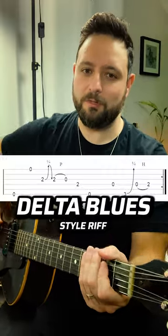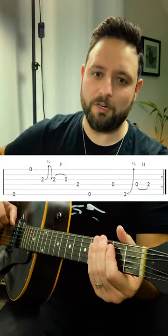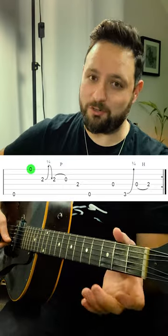Let me show you a swampy Delta Blues style riff that's super repeatable. We start by playing the open low E string, then we're going to play the open high E string.